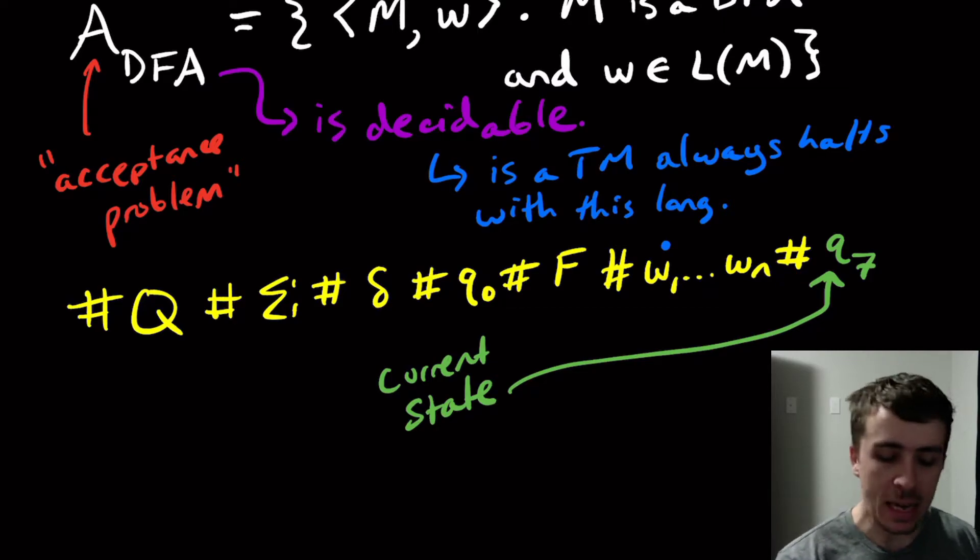And if you run into the pound sign, then you know that you're done. And in the other case, if you have two pound signs in a row, then you're already done.